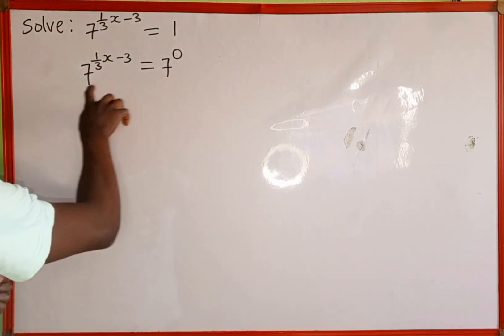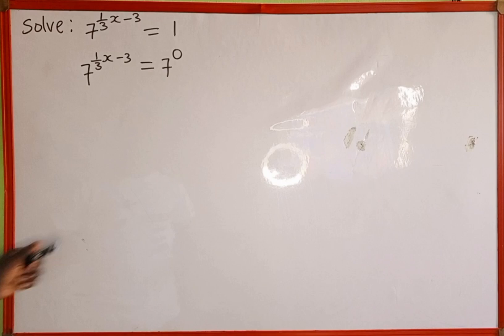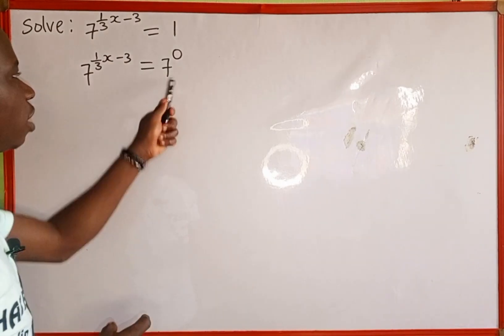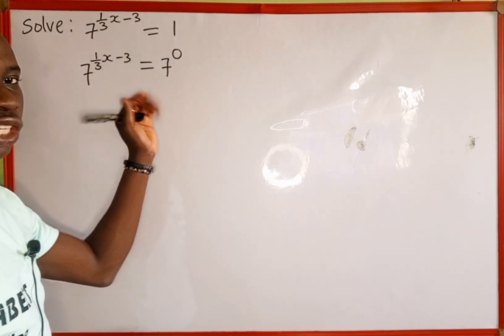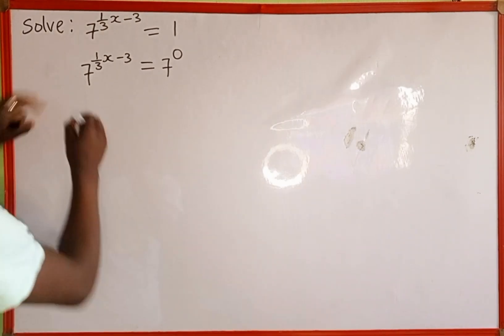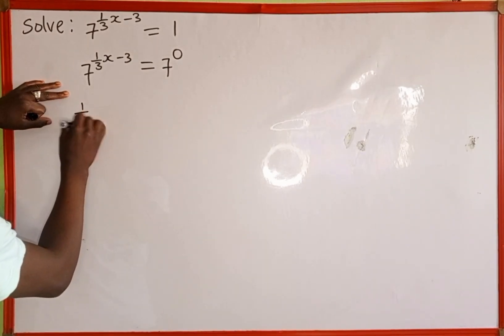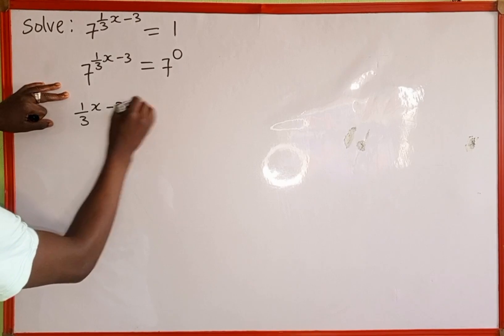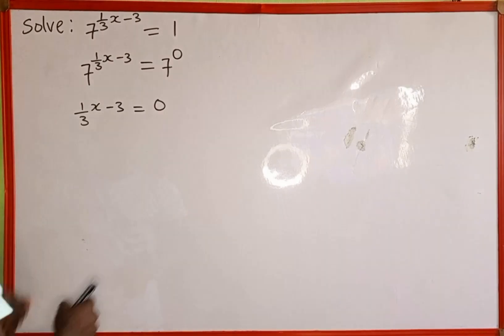Now that the bases are the same, we recall one of the properties of exponents: when the bases are the same, the powers are also the same, so we equate the powers. The first power is 1 over 3x minus 3 equals 0, which is the power here.